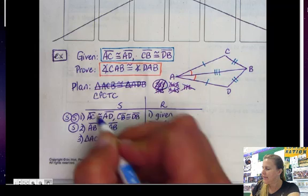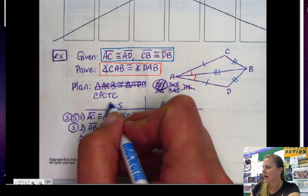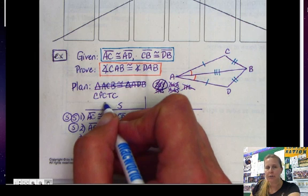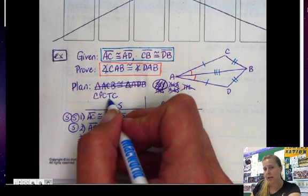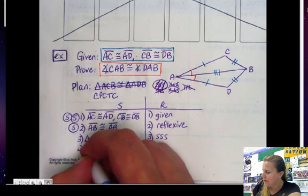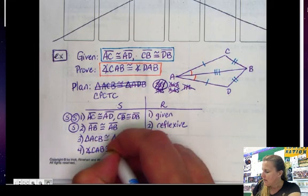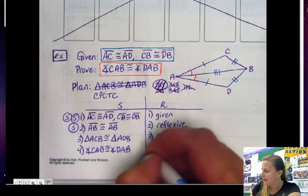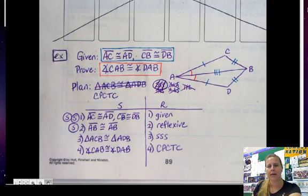So that part of my plan is also finished. Now I want to say that what I want to prove is true because of this new thing that you learned today: corresponding parts of congruent triangles are congruent to each other. So step four is going to be what I want to prove, and my reason is CPCTC. And we're done.